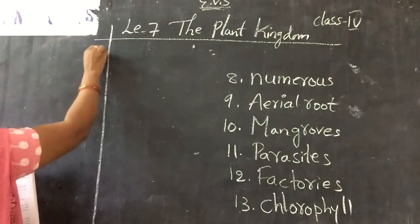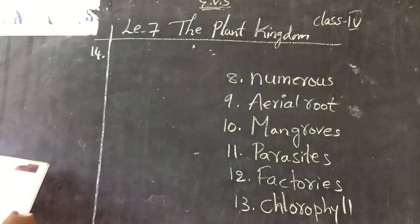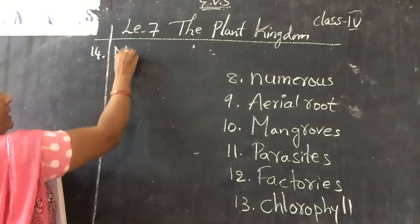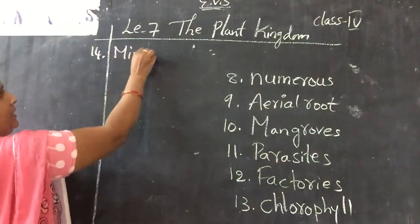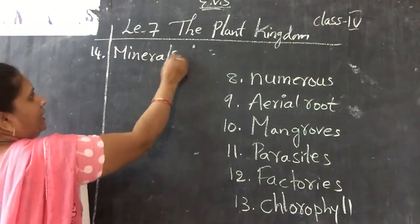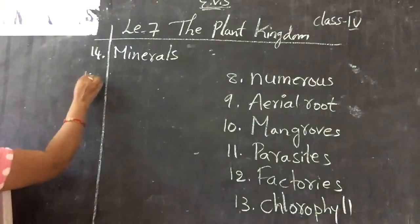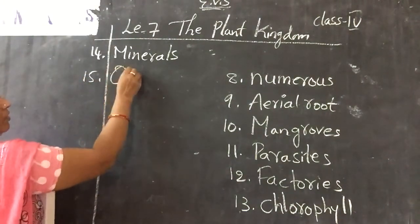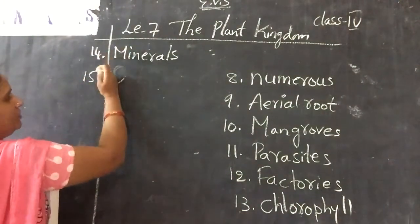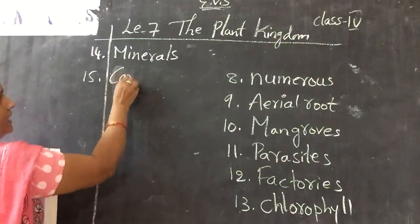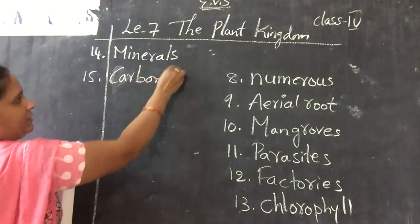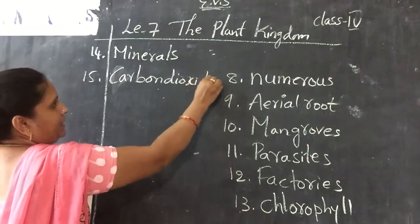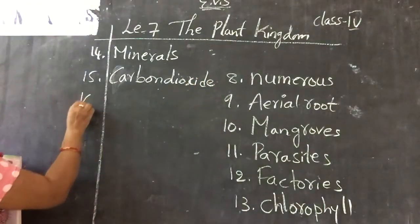Fourteenth one: minerals — M-I-L-E-R-A-L-S — minerals. Fifteenth one: carbon dioxide — C-A-R-B-O-N-D-I-O-X-I-D-E — carbon dioxide.